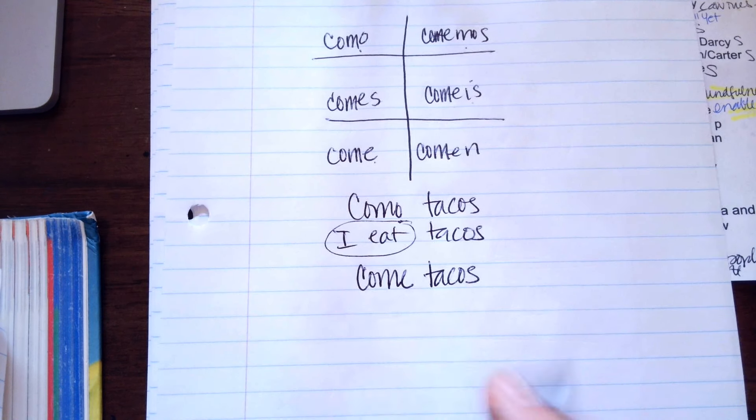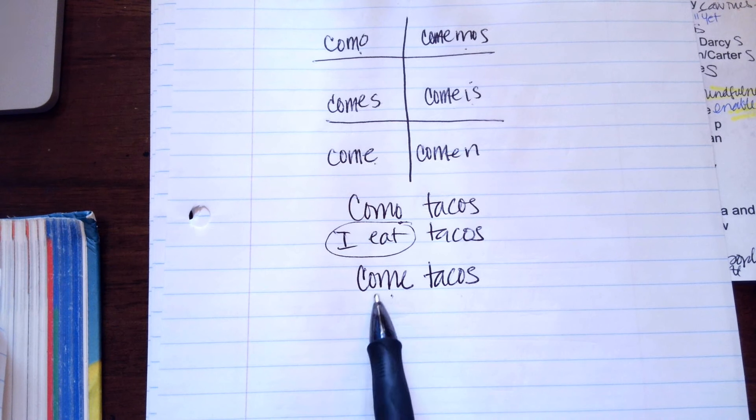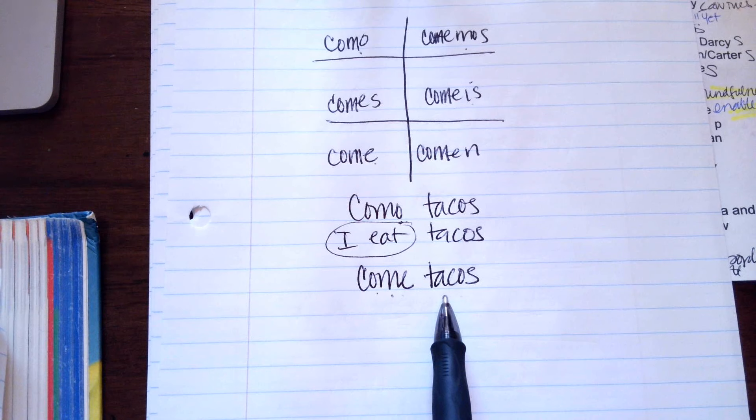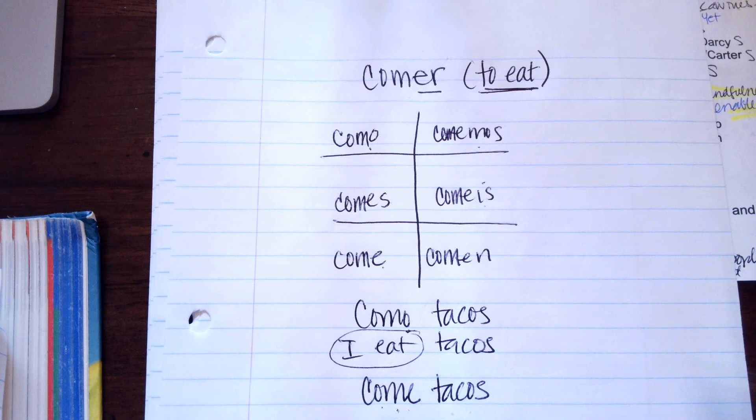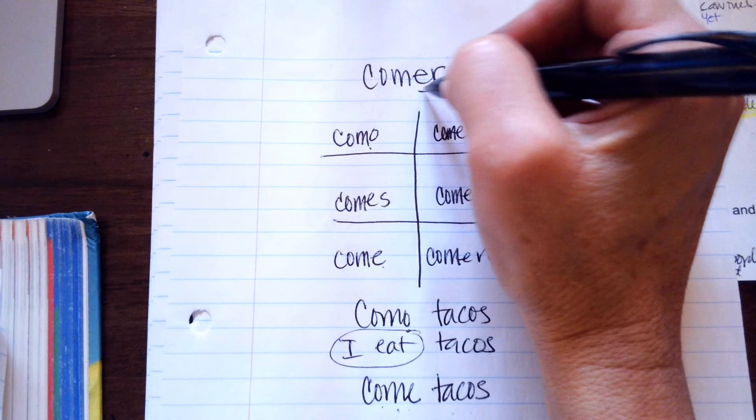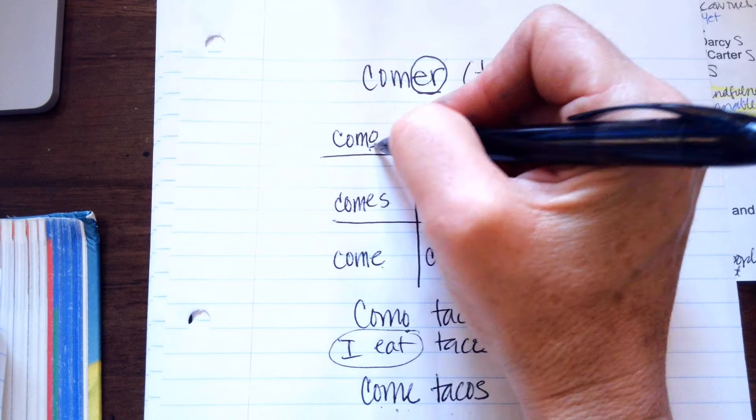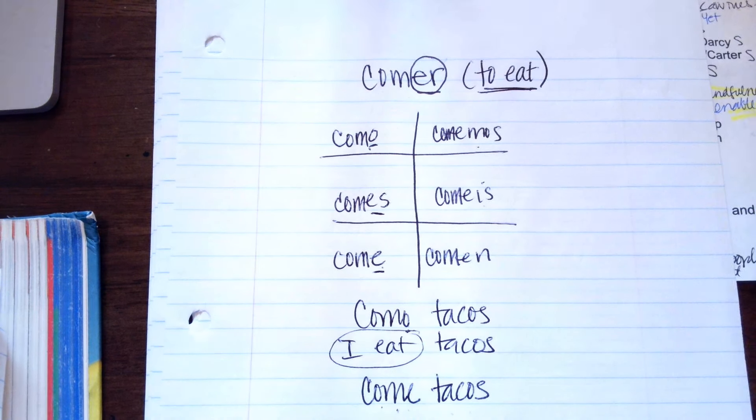So, basically, if you were to say comer tacos, you would say to eat tacos. So, you have to, they call it conjugating, you have to take the ER off and use the proper ending. And that's tricky, right? Because you have to do it in like a second, right?